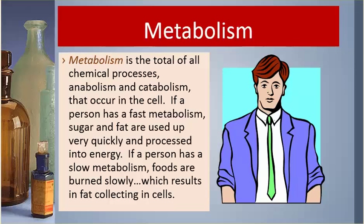Metabolism is the total of all chemical processes — anabolism and catabolism — that occur in the cell. If a person has a fast metabolism, sugar and fat are used up very quickly and processed into energy. If a person has a slow metabolism, foods are burned slowly, which results in fat collecting in cells.